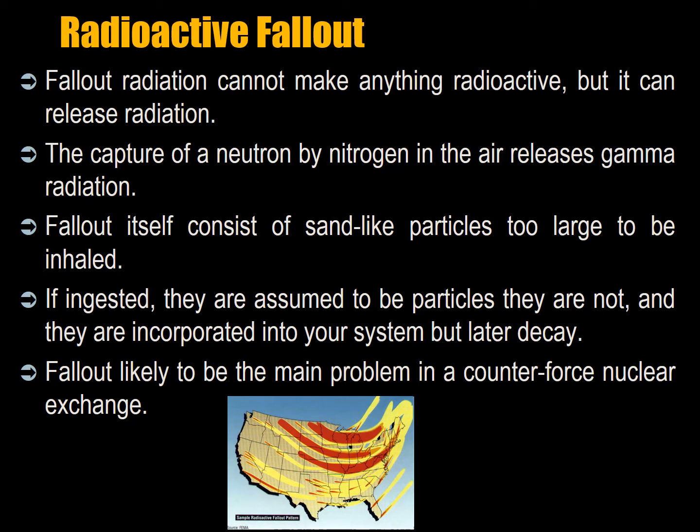Fallout radiation generally cannot make anything radioactive. A neutron can transform an element into a less stable isotope, and alpha particles can transmute another element, but transmutation is statistically very rare. Most of what you're looking at is ionization — ripping electrons off atoms, making compounds fall apart, which manifests as a burn. To capture a neutron by nitrogen in the air actually releases gamma radiation.